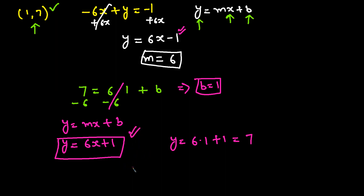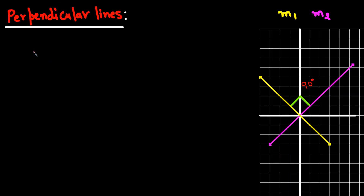That's how you find the equation using a point and the slope when lines are parallel. Now let's go over perpendicular lines. When two lines intersect and make an angle of 90 degrees, those two lines are perpendicular. When lines are perpendicular, their slopes are negative reciprocals of each other.